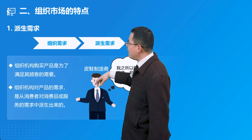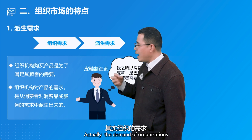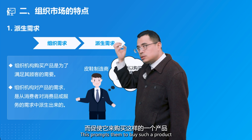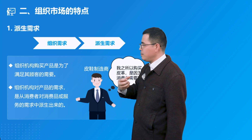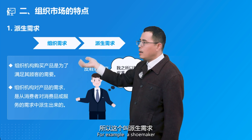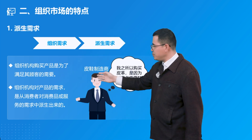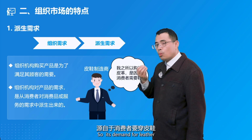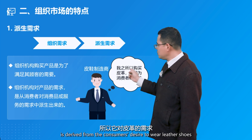The first characteristic is derived demand. The demand of organizations for purchasing a product is really driven by consumer demand — their demand is derived from the consumer's need, hence it is called derived demand. For example, a shoemaker buys leather because consumers want to wear leather shoes. So the shoemaker's demand for leather is derived from the consumer's desire to wear leather shoes.